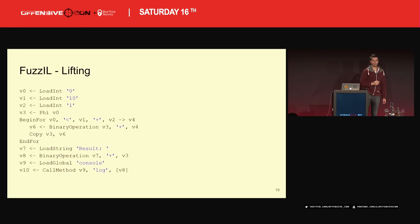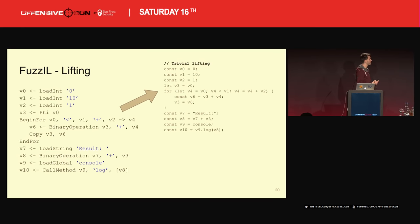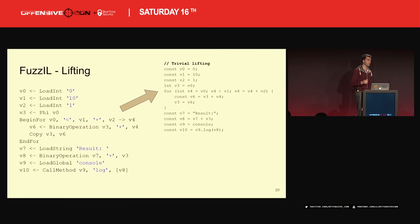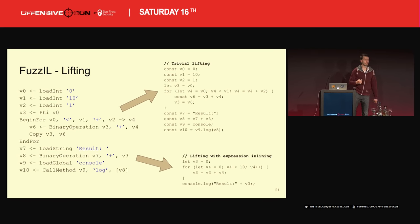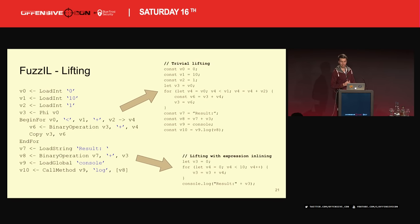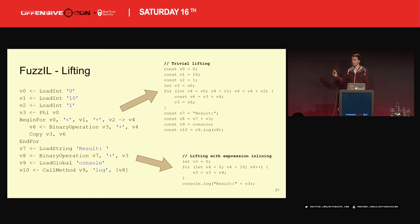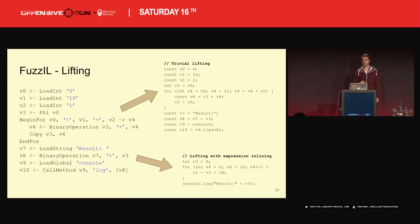There are multiple ways to lift Fuzz IL to JavaScript. The trivial way converts one instruction into one statement — load ints become assignments of constants, begin for starts a for loop, etc. If you want nicer-looking code, there's another way using expression inlining: it inlines constants like 0 and 10 and chains method calls together. The important idea is that both of these syntactic representations do the exact same thing — for an engine, it doesn't really matter. The bottom version might be nicer to look at, but for an engine it shouldn't make a difference.